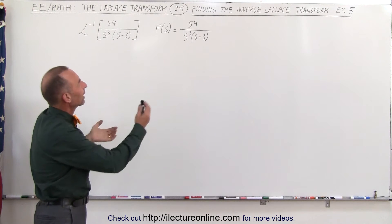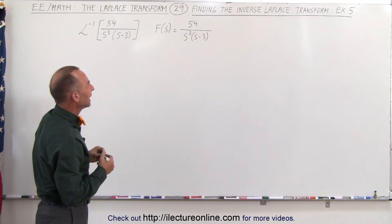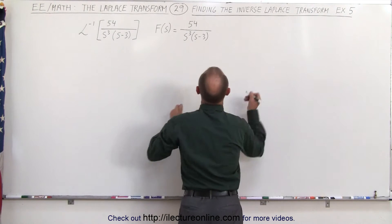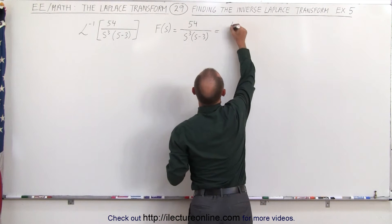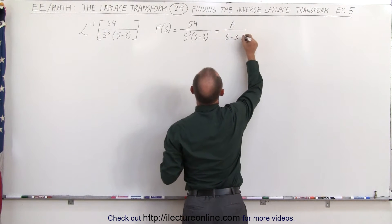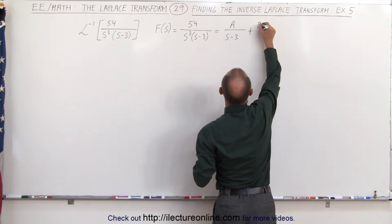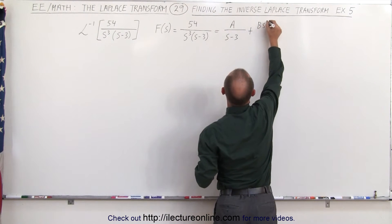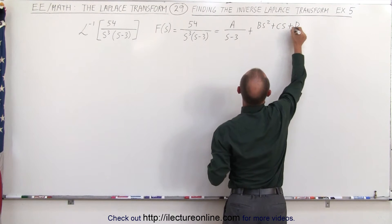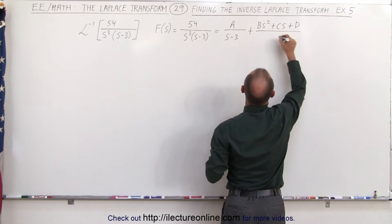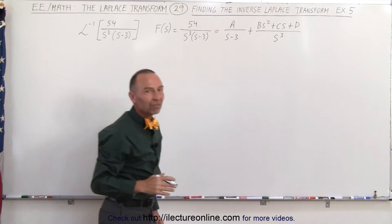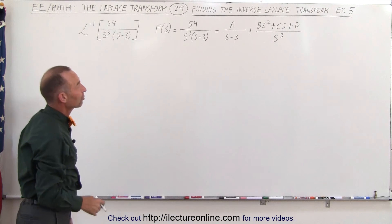First of all we're going to rewrite that function in the frequency domain as follows. This can be written as a divided by s minus 3, plus b s squared plus c s plus d, divided by s cubed. Again, that's how we use the technique of partial fractions.